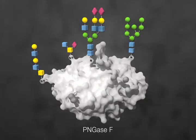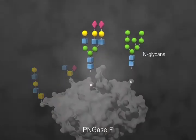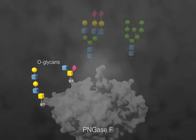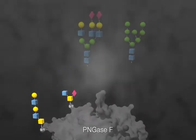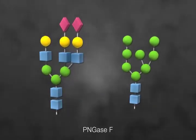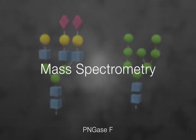PNGase F is able to remove most N-glycans as an intact glycan molecule. If present, the O-glycans remain attached to the protein. The released glycans are intact and are ready for further characterization using analytical methods, such as mass spectrometry.